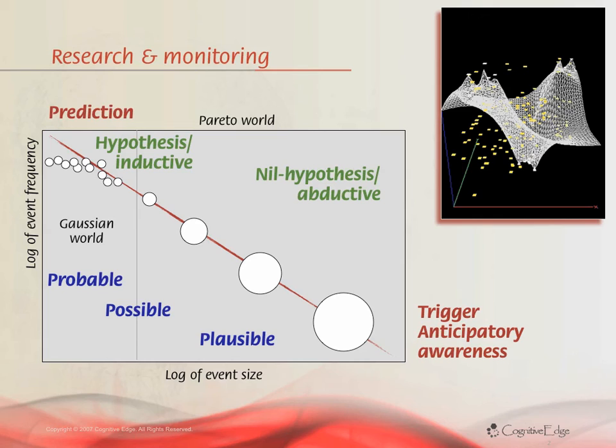Our principles for managing this space are simple. First, we manage problems obliquely. There's a wonderful book by John Kay called Obliquity, which gives loads of examples whereby trying to solve small problems around a major issue makes it easier to solve the major issue itself.